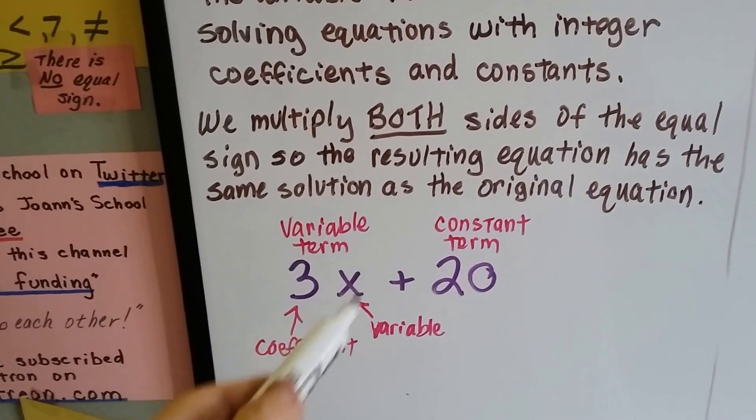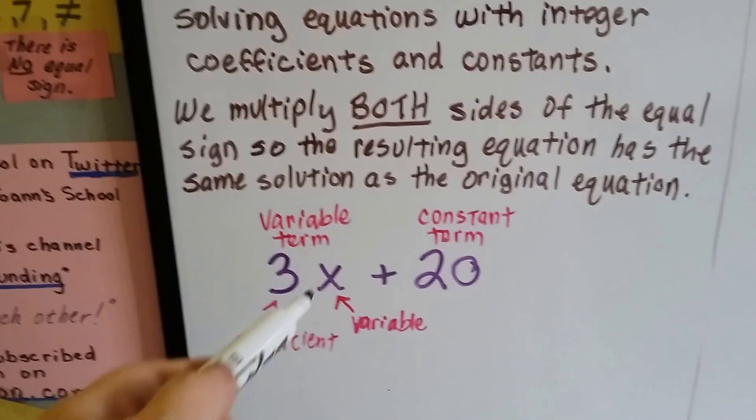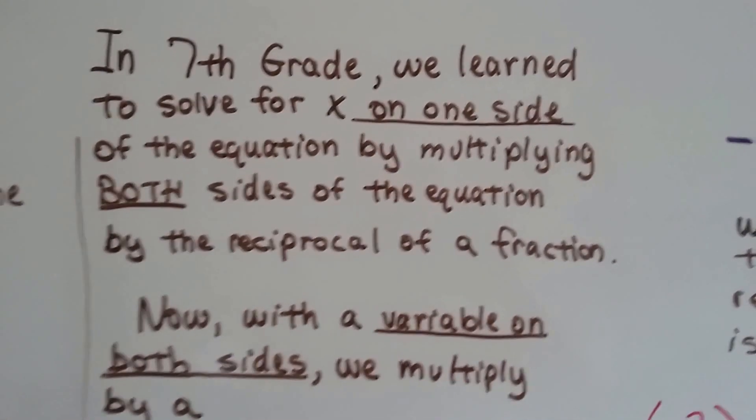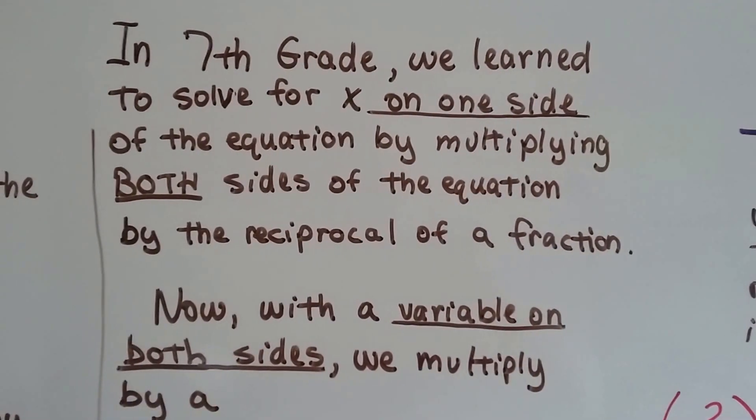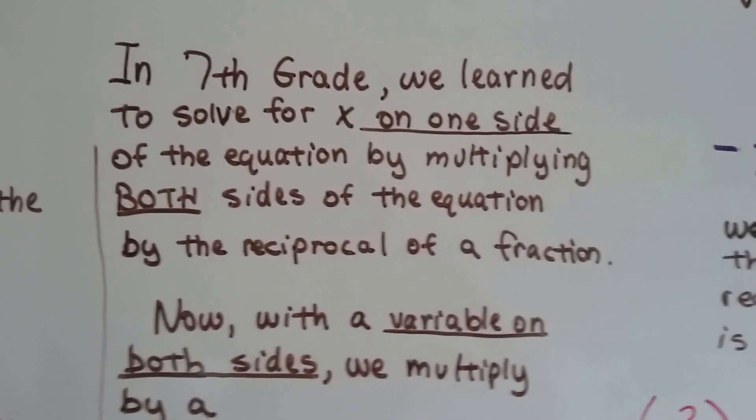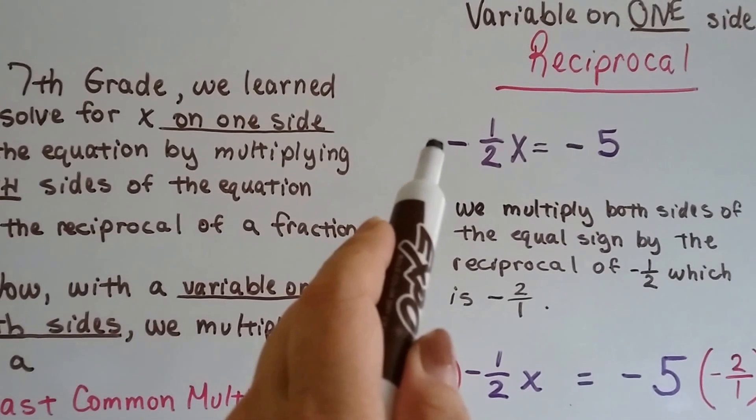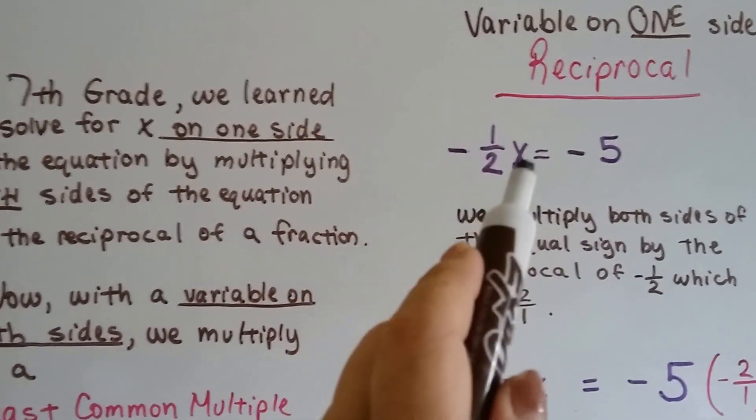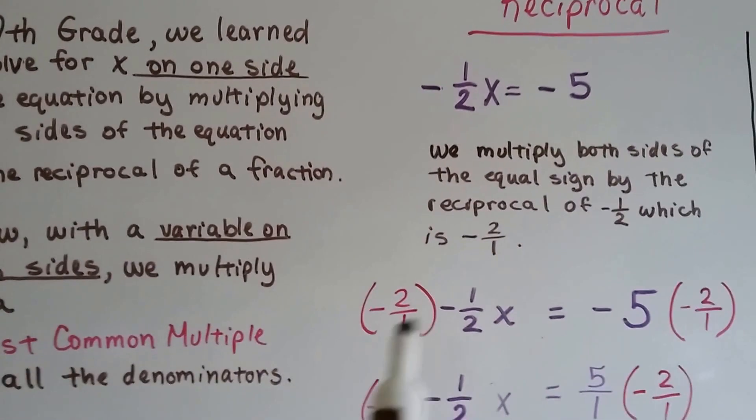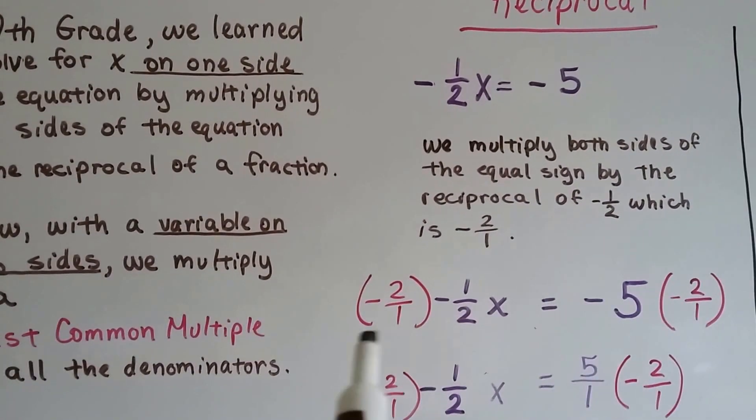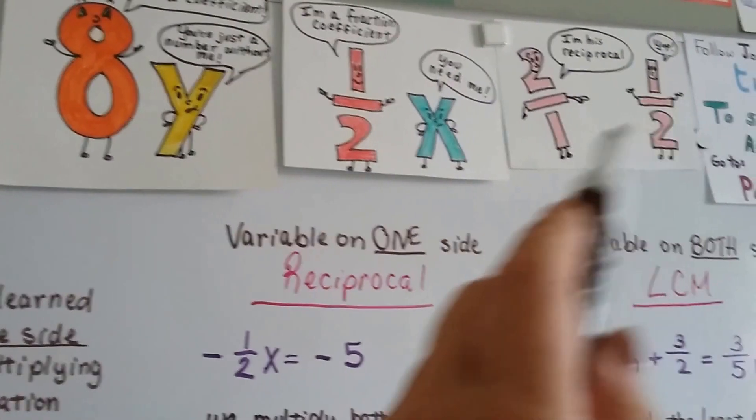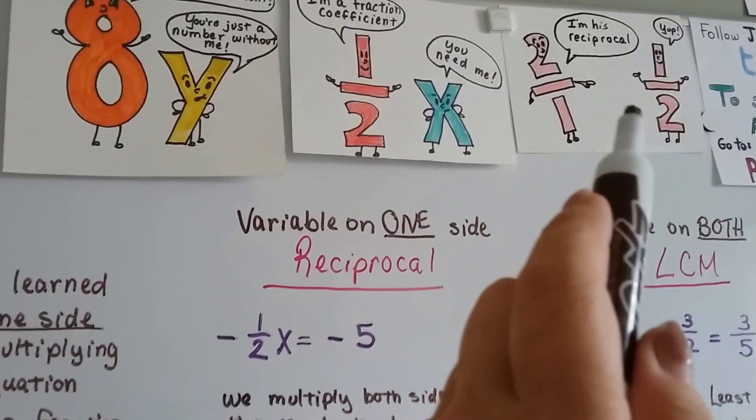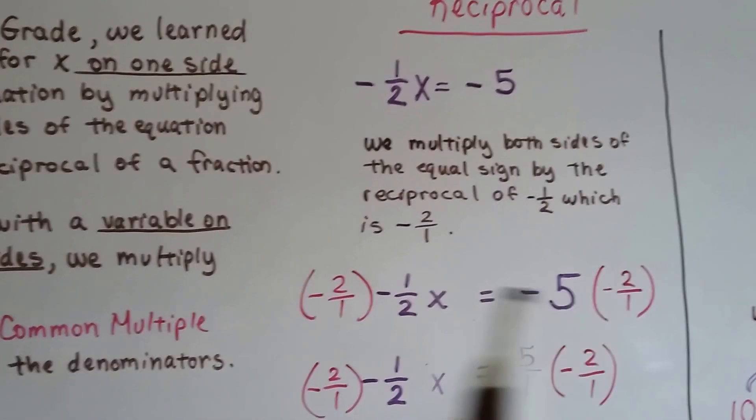That's why they say integer, because integers are negative or positive whole numbers. So it could be a negative or positive coefficient. So it's an integer coefficient. And this variable term can change depending on what that variable is standing for. I don't know if you remember, but in seventh grade, we learned to solve for x on one side of the equation by multiplying both sides of that equation by the reciprocal of a fraction.